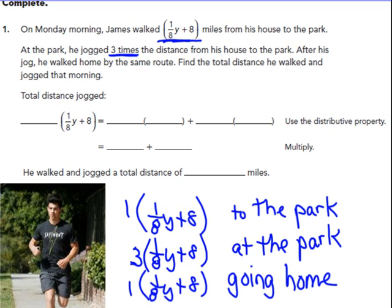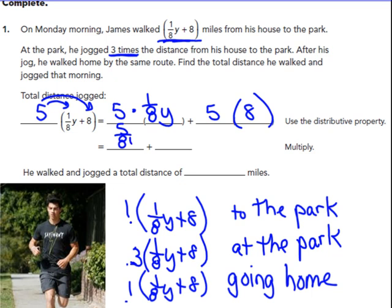He did that distance 5 total times. So to find the total distance that he walked and jogged, 5 times 1/8Y plus 8. So I'm going to distribute 5 times 1/8. And this is from the reteach book. So they're doing it in steps here. 5 times 1/8Y is 5/8Y and 5 times 8 is 40. So he walked and jogged a total distance of 5/8Y plus 40 miles. That has to go in parentheses because the miles just doesn't go on the 40 part, it also goes on the 5/8Y.